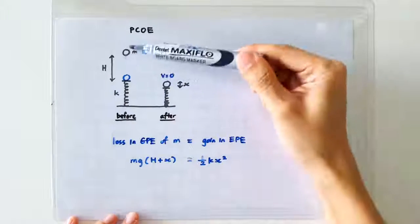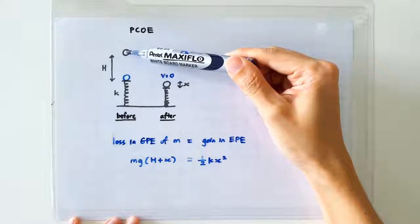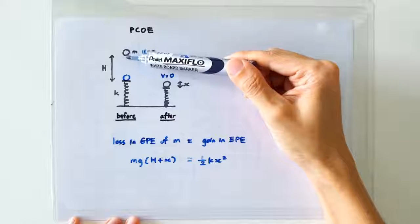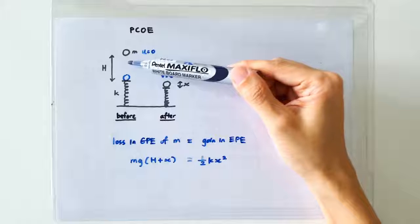The first part is when the ball free-falls from here to here. So that's a uniform acceleration motion with constant acceleration G.